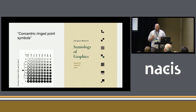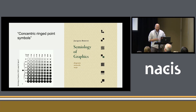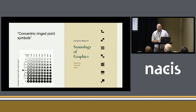Basically the concept is that you have a ring or a circle and then you fill it proportionally based off a data value. Bertin actually takes it a step further and adds a second variable, varying the outline width based off a data value, but I'm not going to touch on that in this talk.